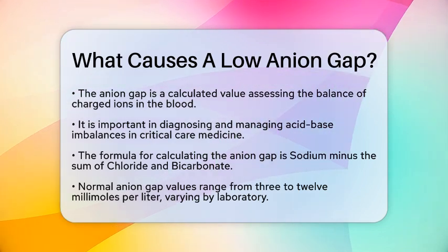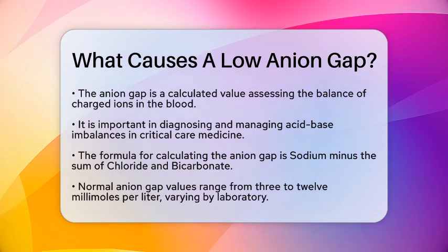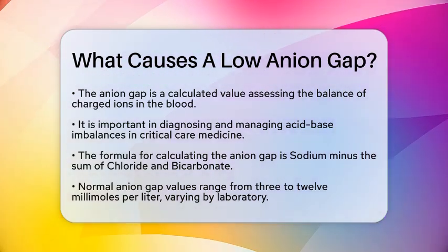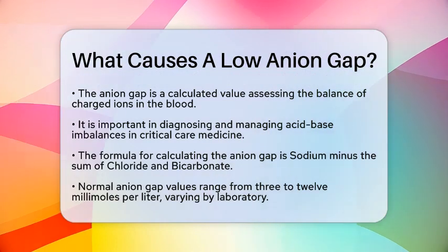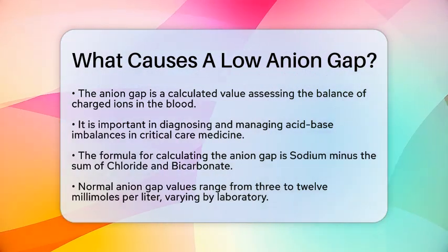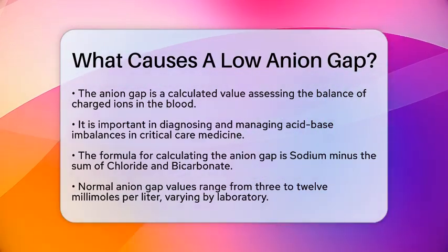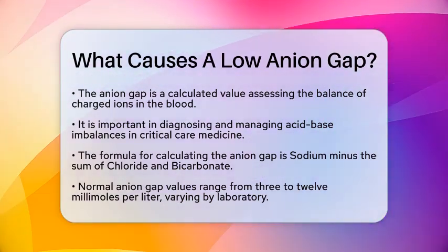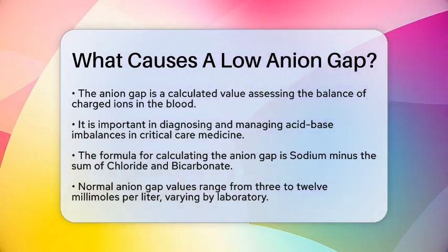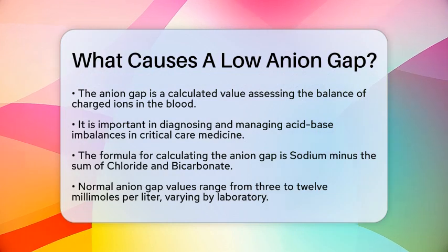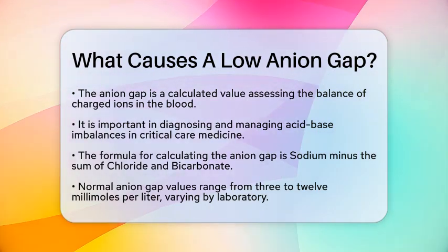The anion gap is a calculated value that helps assess the balance of positively charged ions and negatively charged ions in the blood. It plays a significant role in diagnosing and managing acid-base imbalances. To calculate the anion gap, you use the formula: anion gap equals sodium minus the sum of chloride and bicarbonate. Normal values typically range from 3 to 12 millimoles per liter, but this can vary slightly between different laboratories.